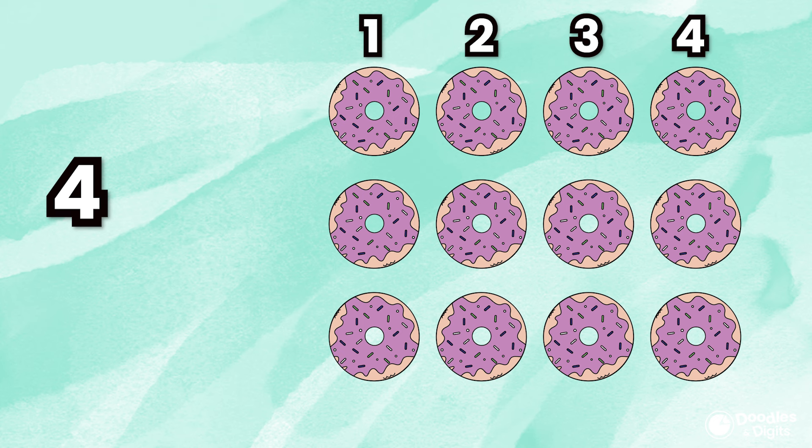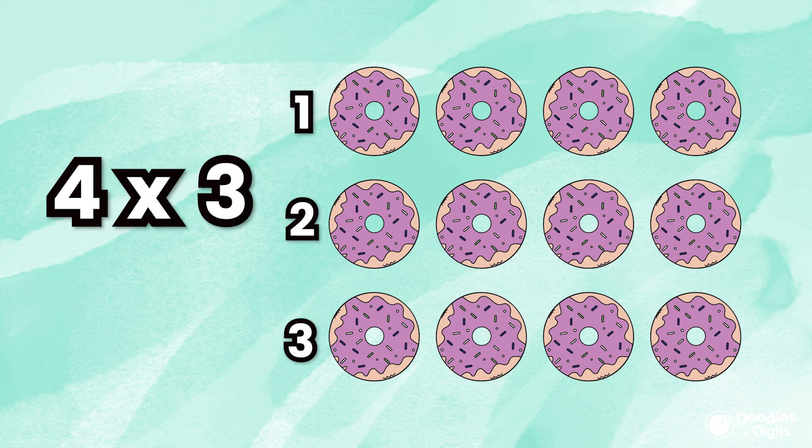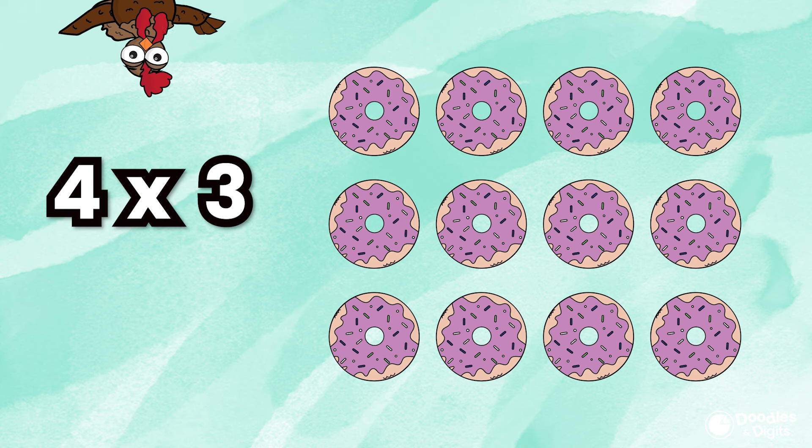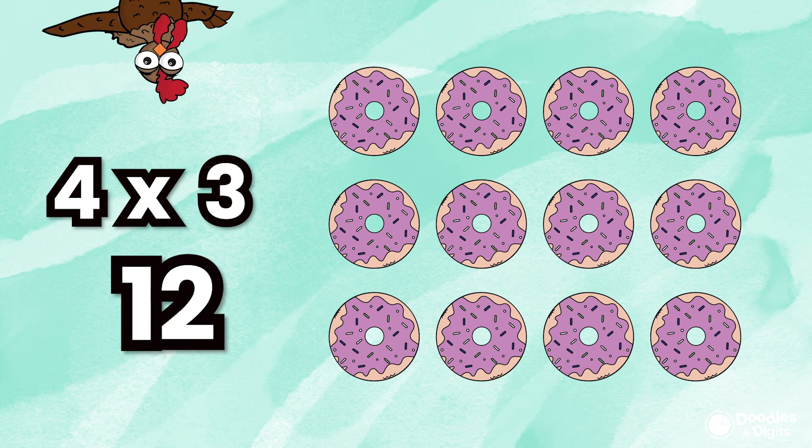Next, I'm going to look how many rows we have. We have 3 rows. So our equation is going to be 4 times 3. 4 times 3 equals 12. So if you went through and counted every donut in this array, it would equal 12.